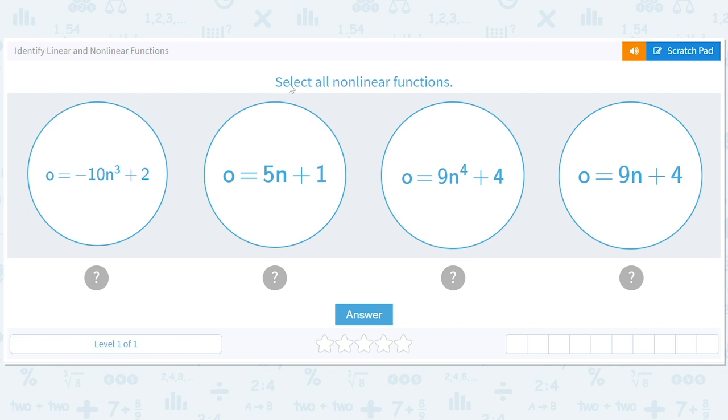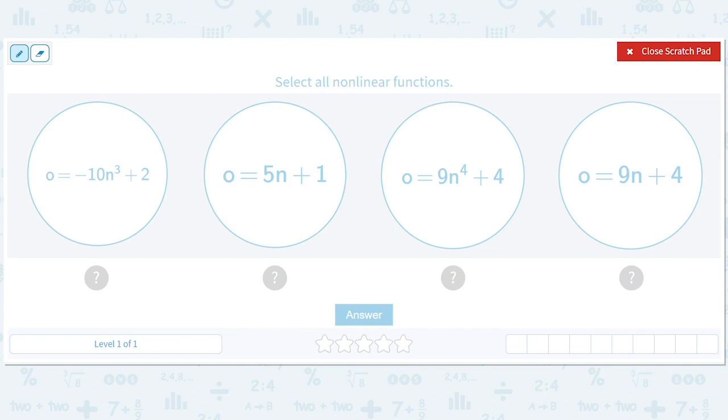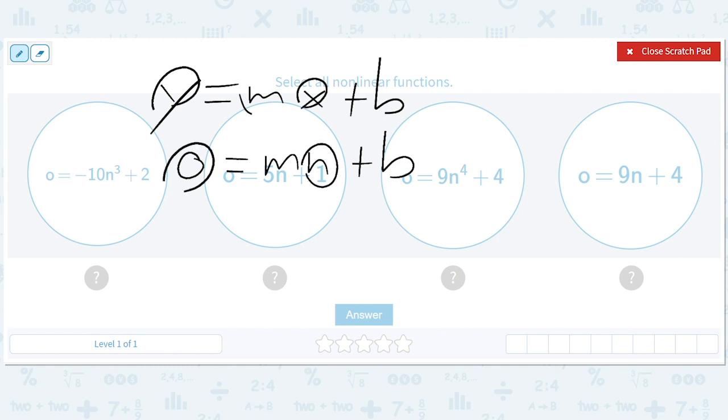Identify linear and nonlinear functions. Okay, so what's a linear function? A linear function looks like y equals mx plus b, but you could change these letters around. You could say o equals m times n plus b, where maybe n is number of days and o is how much oatmeal you've eaten or something like that. So it doesn't really matter that it's y or x.